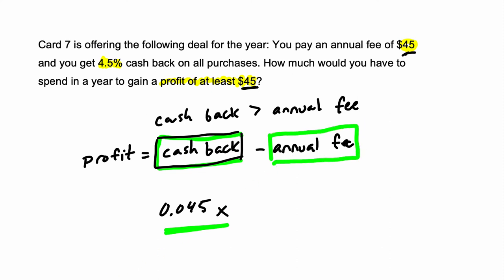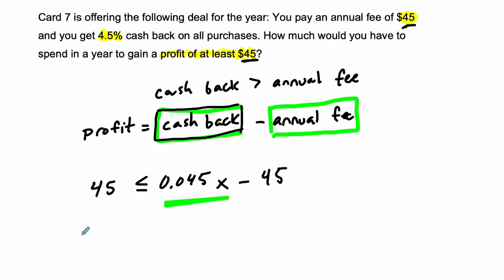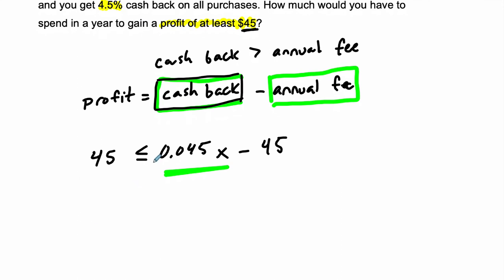So that's our loss. So we subtract that, minus $45. That amount, we're seeing a profit of at least $45. So it has to be greater than or equal to $45. That's our profit amount. That's what we're saying at least that much. So how do we do that? We solve this equation.